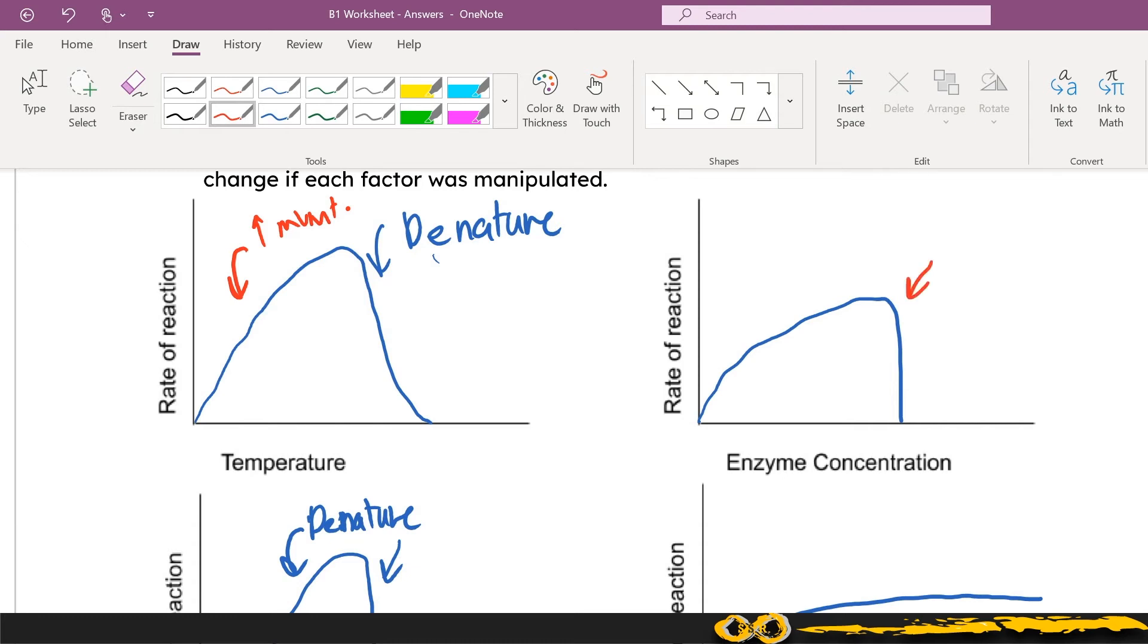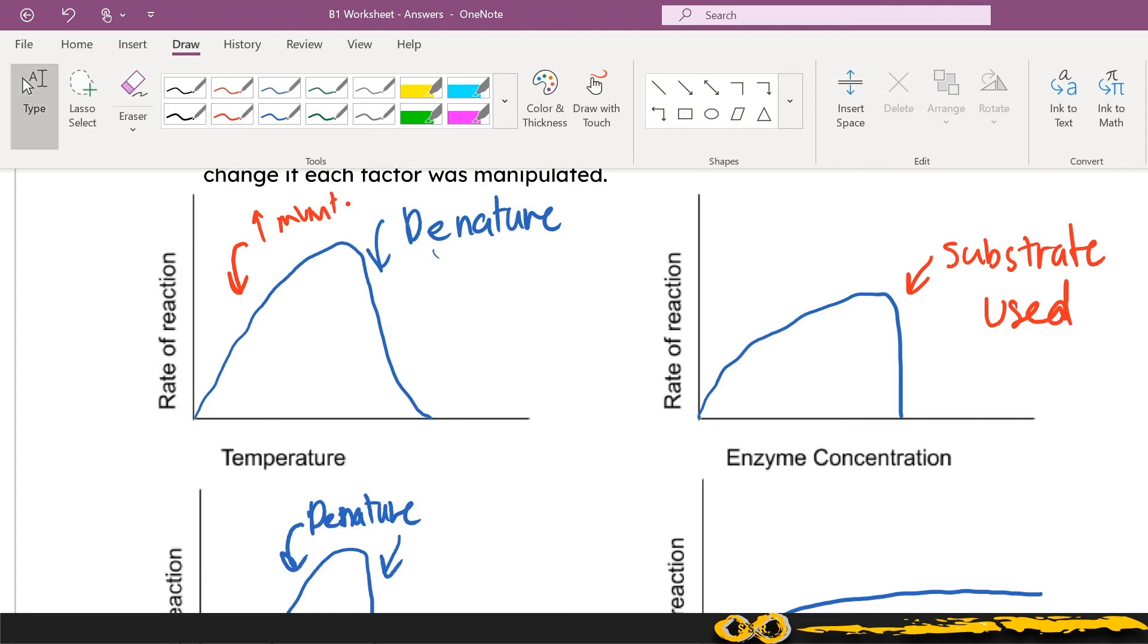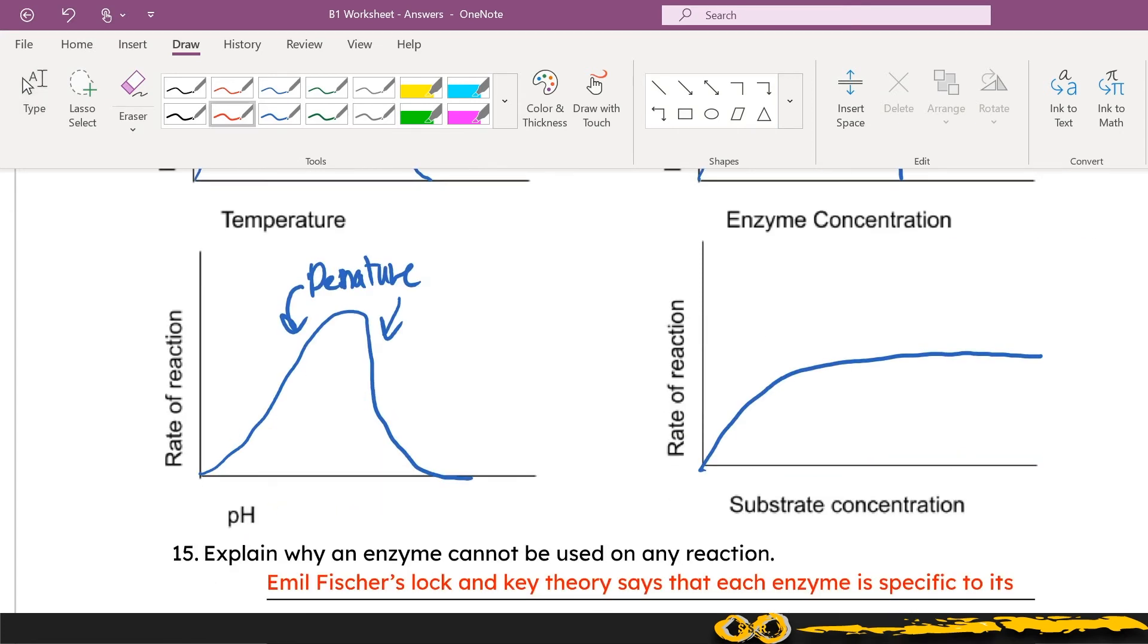In terms of looking at enzyme concentration, you know that you reach a point where you use up all the substrate and so therefore you're going to have a straight drop down. There's no substrate to be reacting with the enzyme and therefore the reaction will stop.